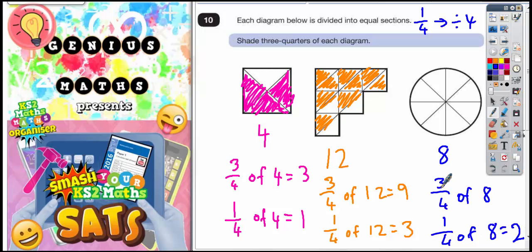We want 3 of those. So 3 lots of 2 is 6. So 3 quarters of 8 is 6. You can shade any 6 pieces in. So 1, 2, 3, 4, 5, 6. And that is 3 quarters shaded of each diagram.